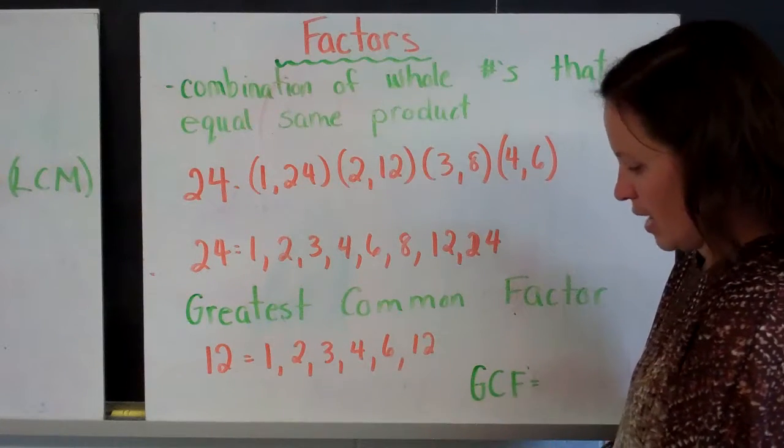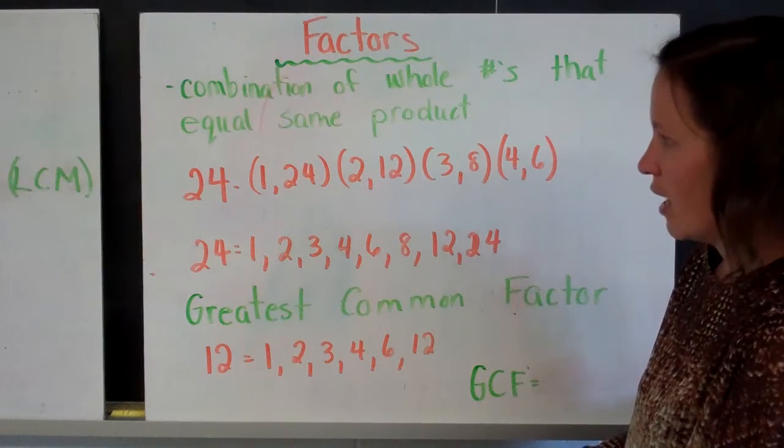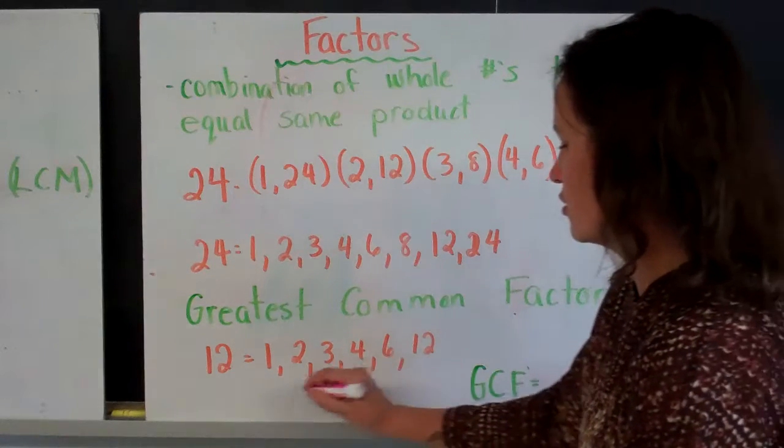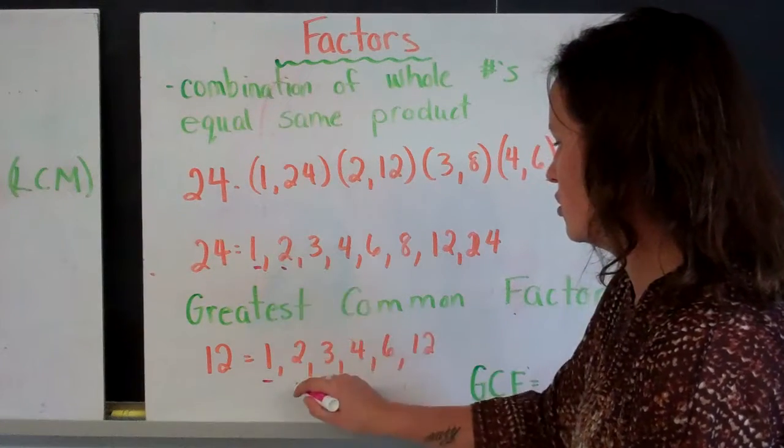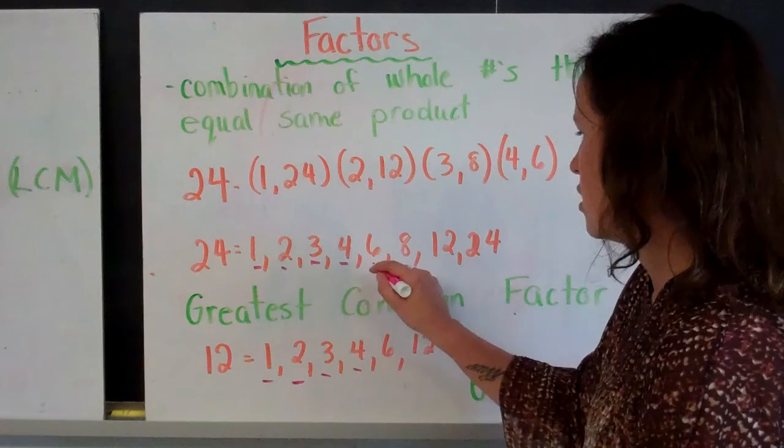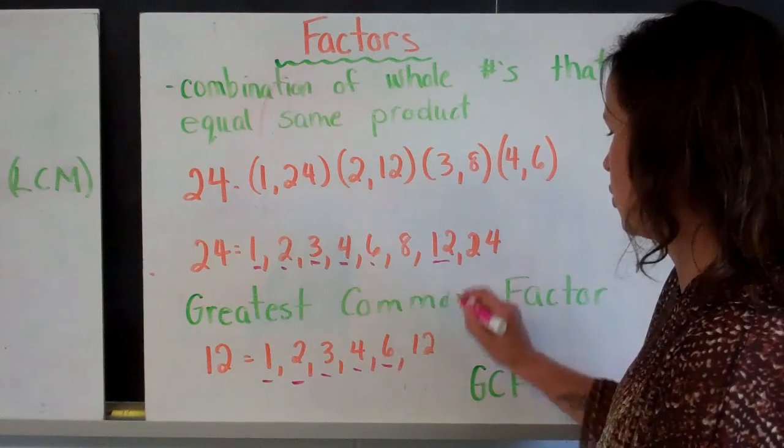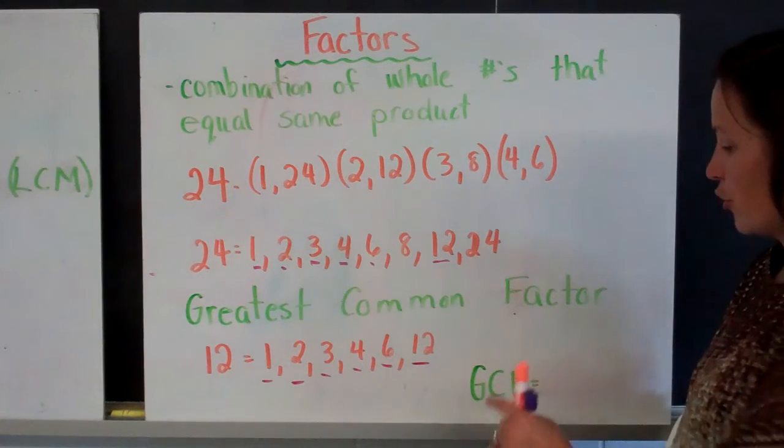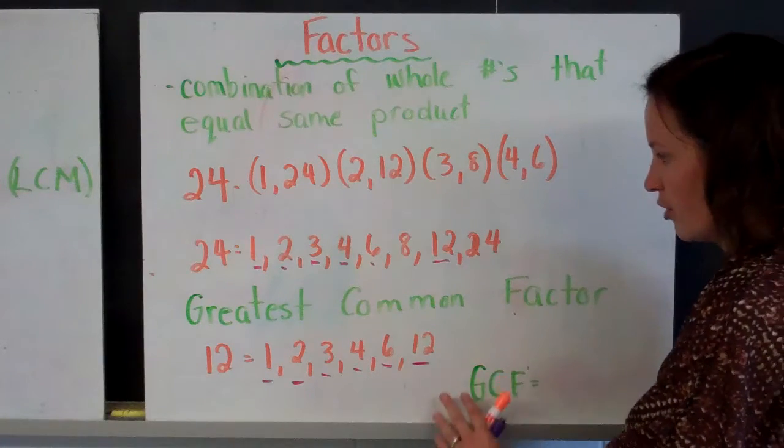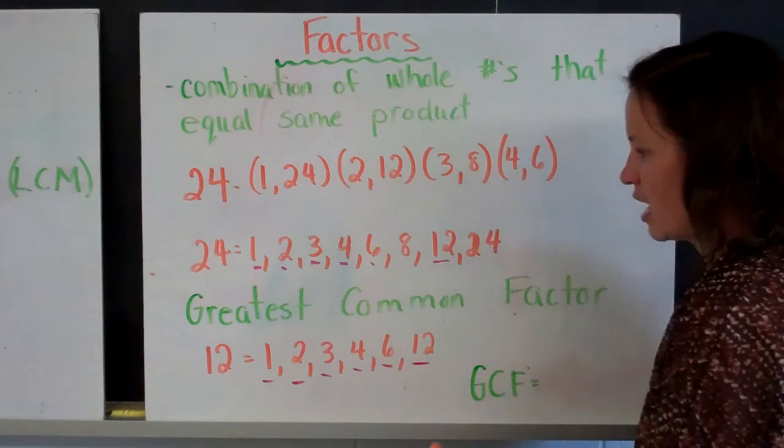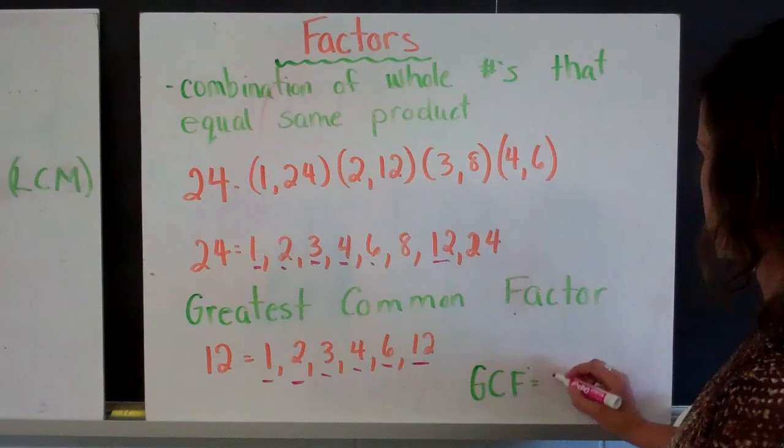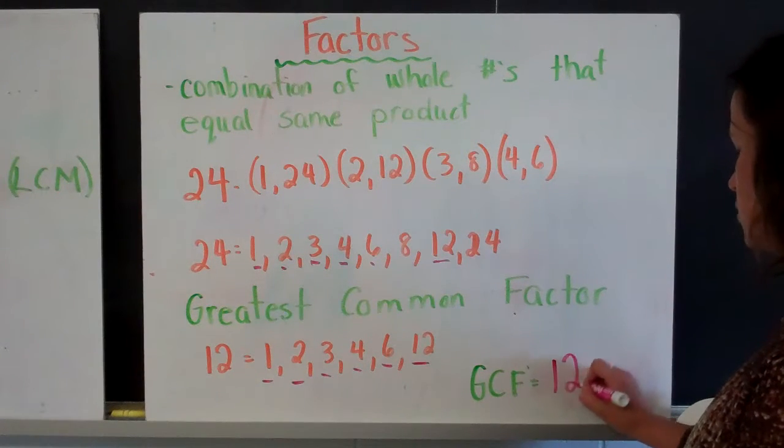And first I'm going to identify the common factors. So we have 1, we have 2, we have 3, we have 4, we have 6, and we have 12. So if I'm looking for the greatest common factor, the largest factor that these two numbers have in common, it would be 12. So I can write, greatest common factor, 12.